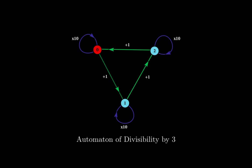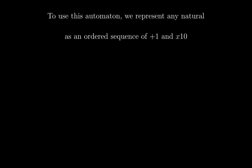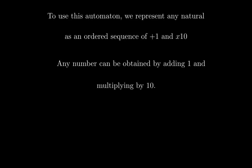So this is the automaton of divisibility by 3. To use this automaton, we need to represent any natural number as an ordered sequence of additions of plus 1 and multiplications by 10. You can do this because any number can be obtained by adding 1 and multiplying by 10, starting from 0. Let me give you an example.